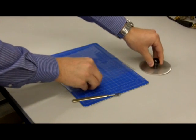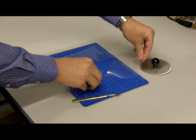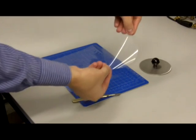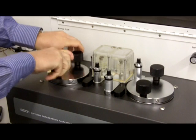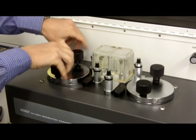Now the sample is ready to place on the instrument for testing. Now that we have the film sample, we next remove the chamber lid.